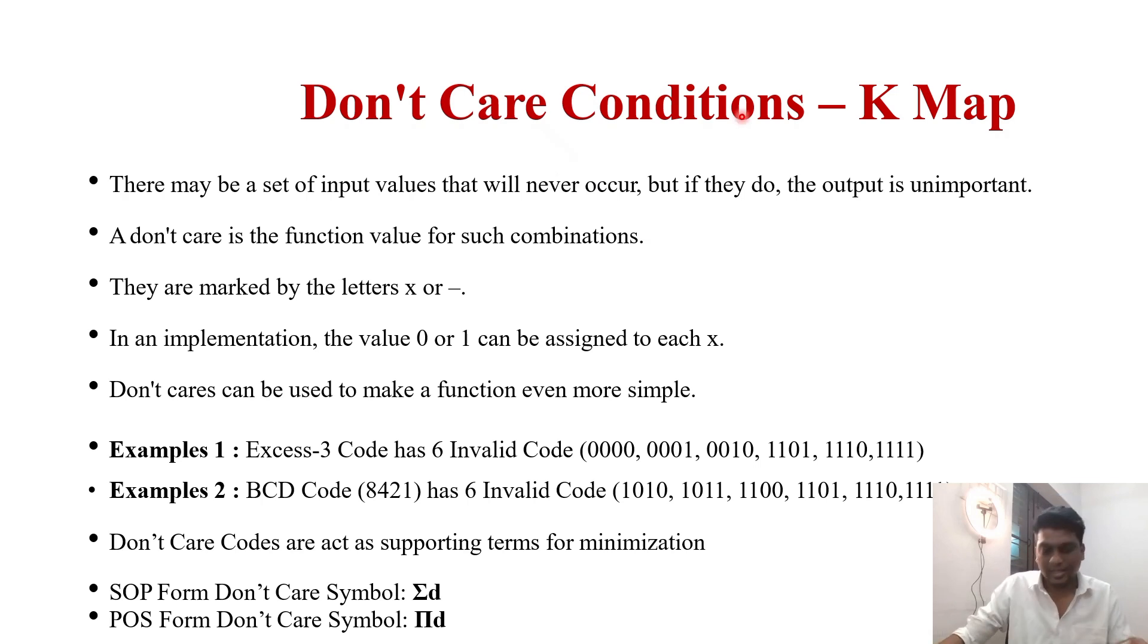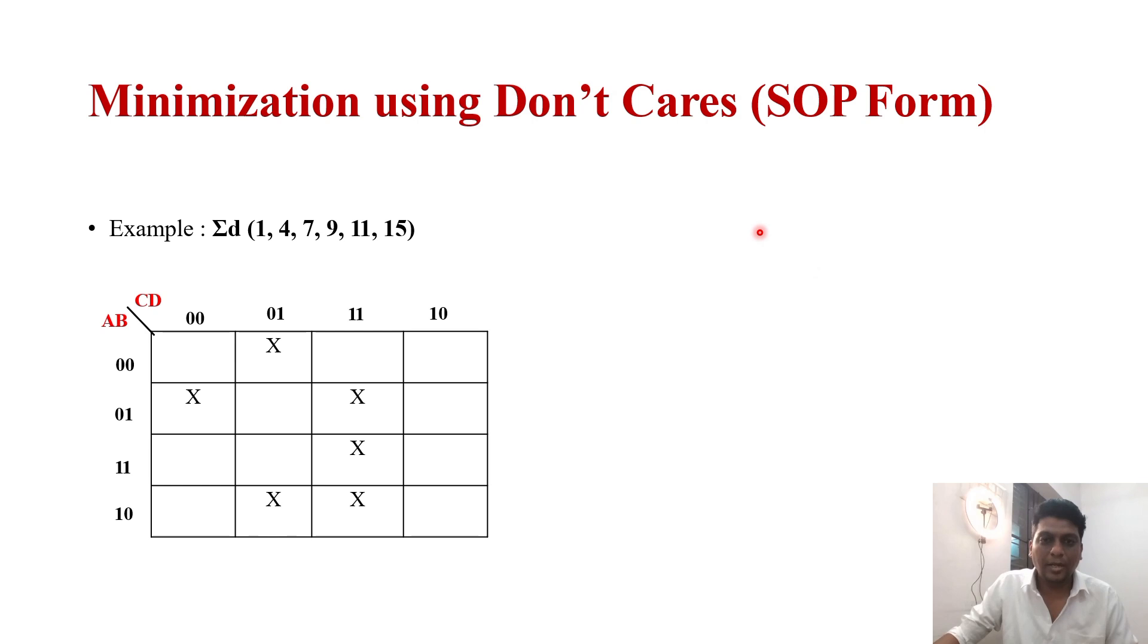Designers use them to achieve minimum cost, fewer gates, and simpler circuits because they provide flexibility in grouping during K-map simplification. This is how we minimize using don't cares in SOP form. This symbol represents the don't care condition.